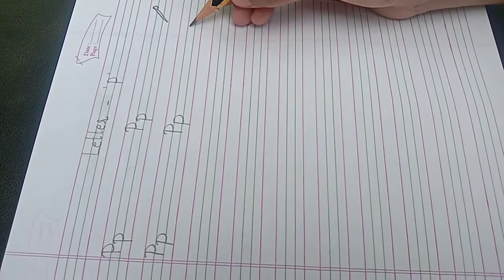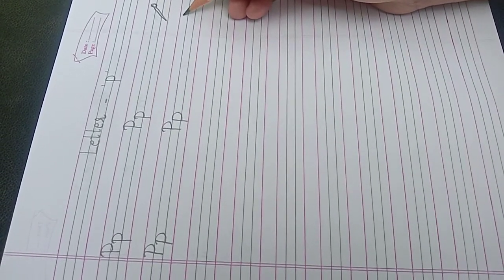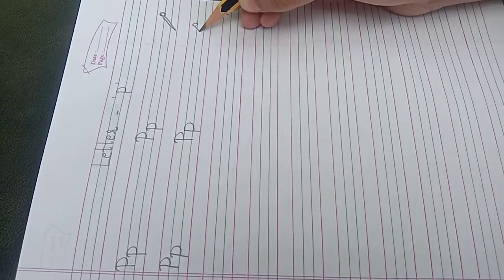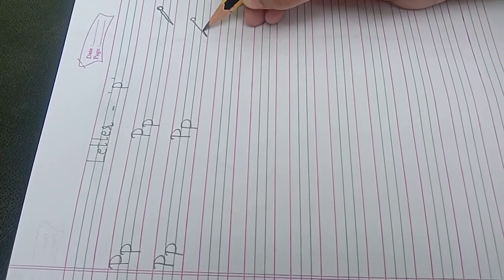P for pin. Make a small circle, then a slanting line, and go back.